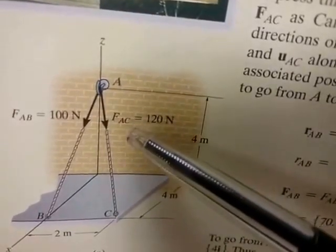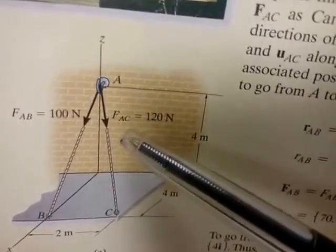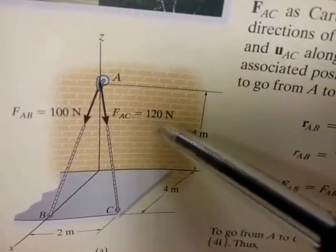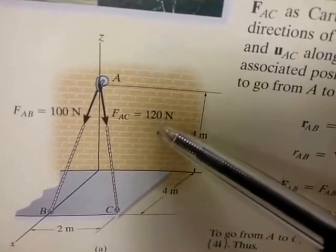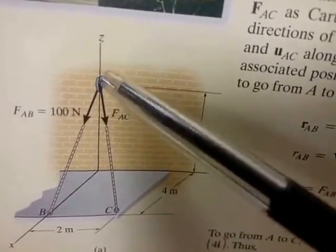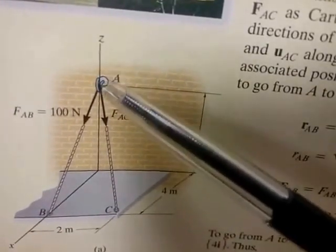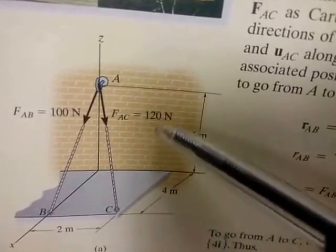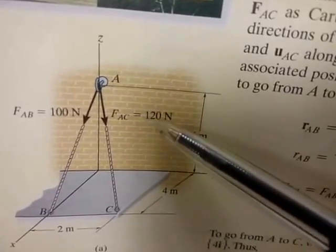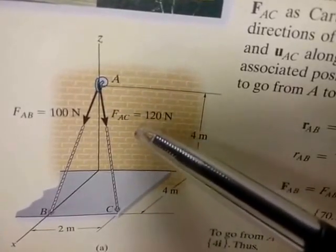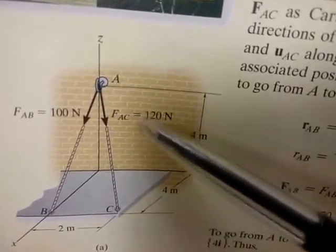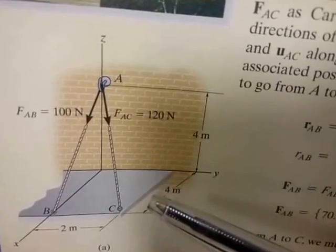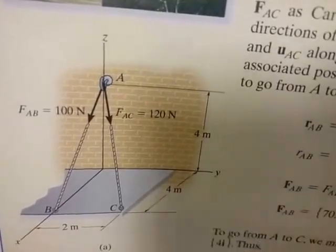Similarly, in order to convert the force FAC into Cartesian vector notation, we need to multiply it by the unit vector from A to C. Why a unit vector? Because if I multiply by a unit vector, it gives the force the correct direction from A to C, but because it's a unit vector, it does not alter the magnitude of FAC.